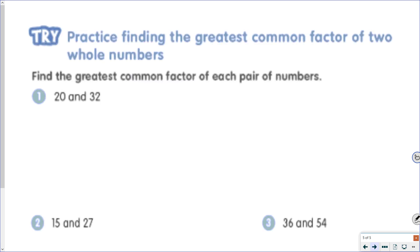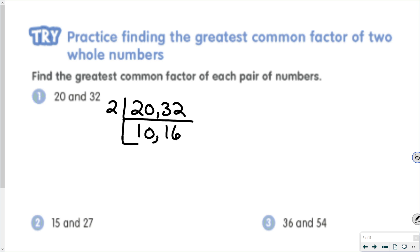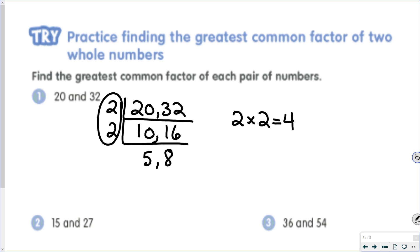For 20 and 32, they're both even numbers, so we can divide those by 2. 20 divided by 2 is 10, and 32 divided by 2 is 16. Those are both even numbers, so we can divide again by 2: 10 divided by 2 is 5, and 16 divided by 2 is 8. We cannot divide those by the same number. So we take what's on the side: 2 times 2, which is 4. So our greatest common factor is 4. If you recognize that you could divide both 20 and 32 by 4, you can do that, and then you just have that one number on the side as your greatest common factor.